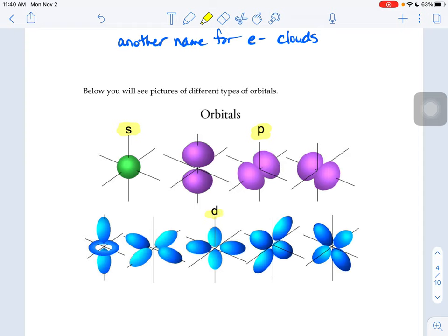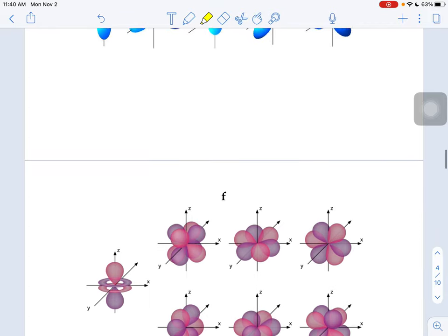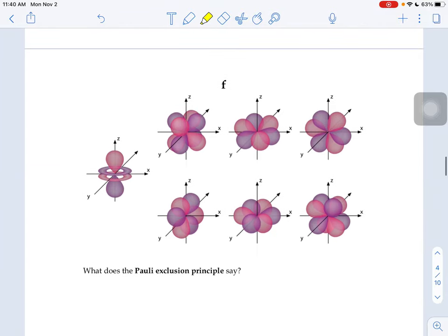There's something called D-shaped clouds, which kind of look a little bit like a bloated letter X. And there's five different types of D-shaped clouds, and then there's F-shaped clouds, which are really complicated. And there's seven different types of F-shaped clouds.